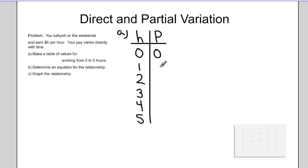If I work 1 hour, I make $6, and so on, counting up by 6 until I end up making $30 when I work 5 hours.